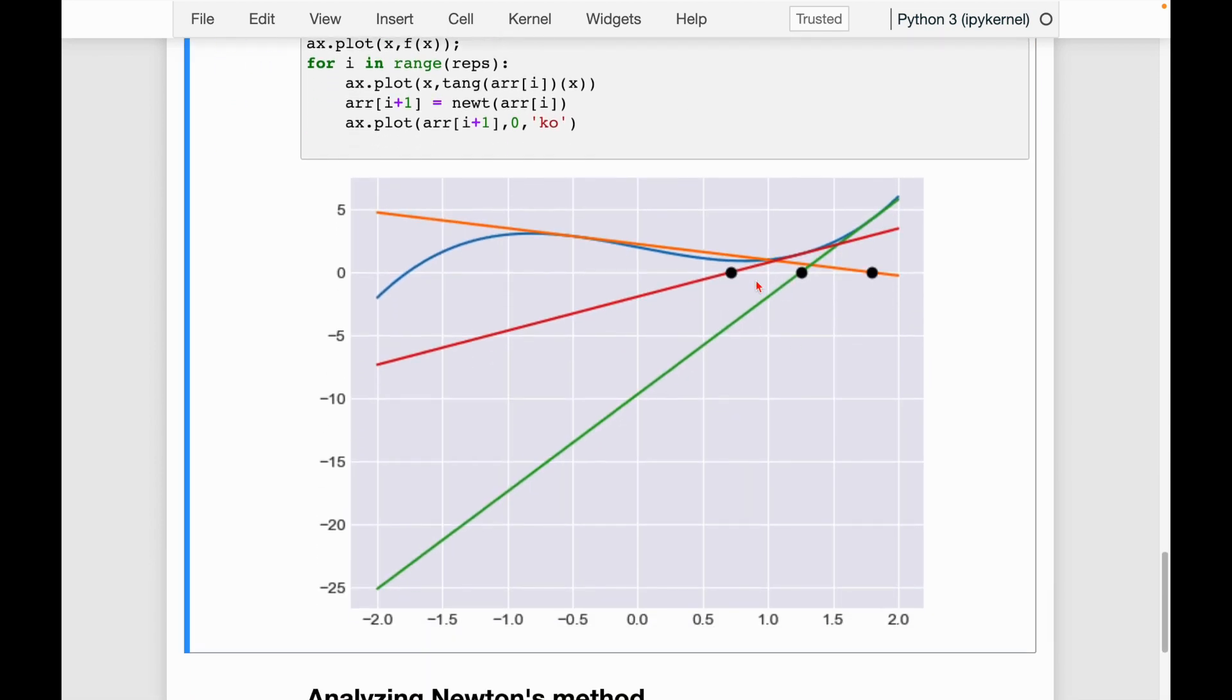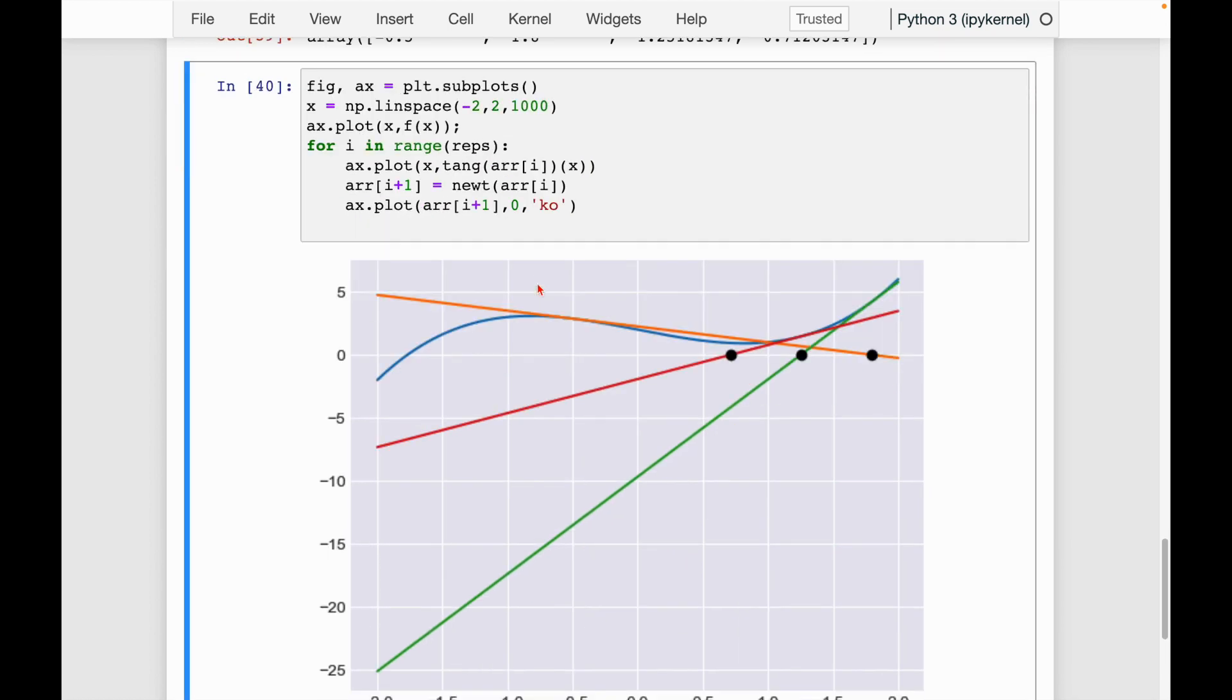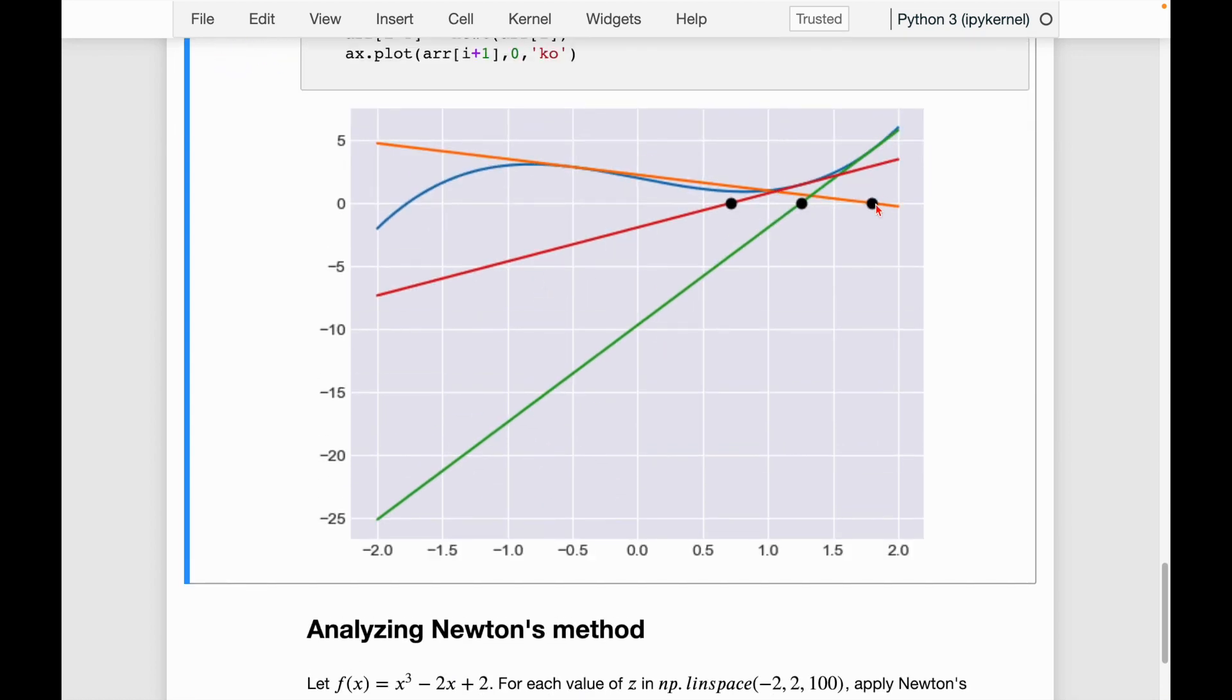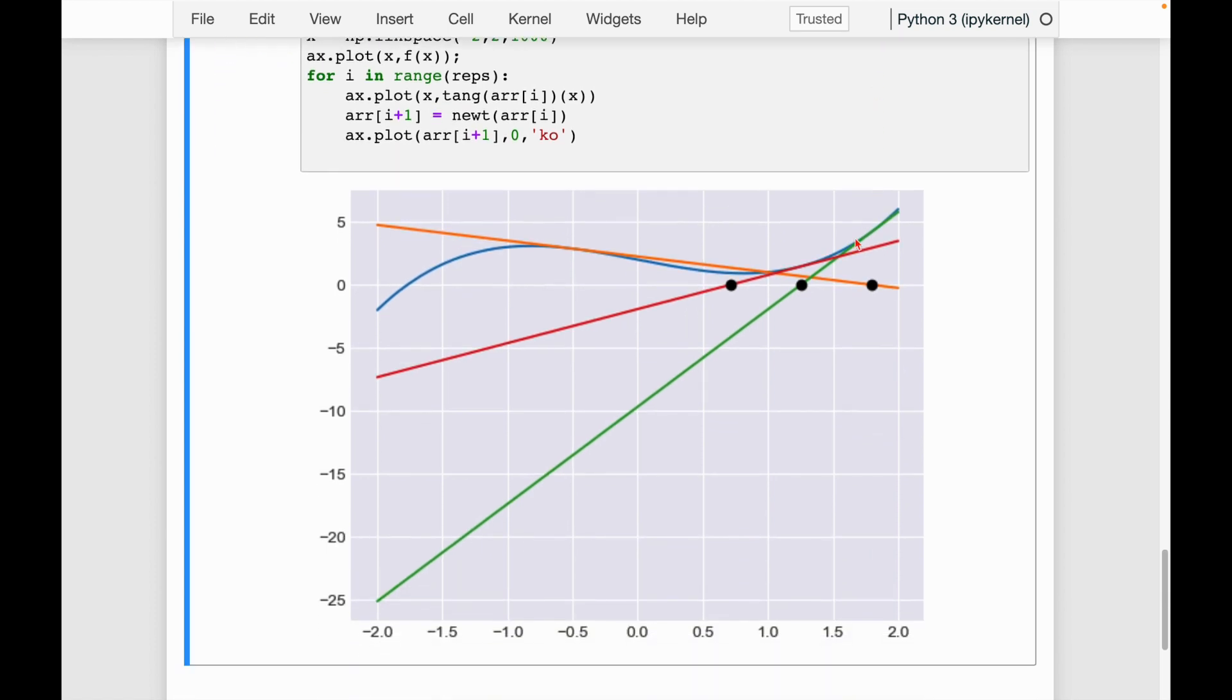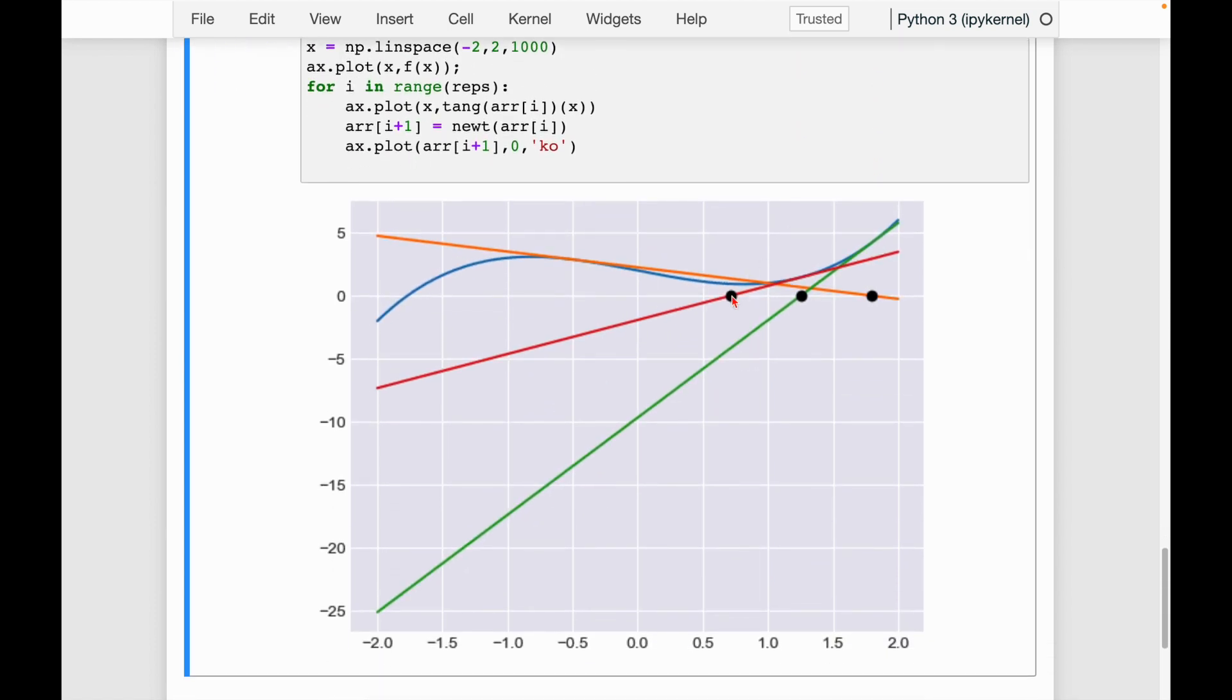Now remember, the y value is going to be zero there because this is where it crosses the x-axis. And then basically, if I want to plot circles, it's the same syntax as MATLAB. I'm going to specify O for circle and let's have it be black circles. So we can see here zero or kind of first it was 0.5. We didn't plot that one. Then it went to 1.8. So 1.8 is about here. Then it went to 1.25. So there's 1.25. Then it went to 0.71. So there's that point.